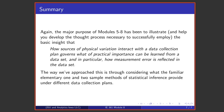To summarize modules five through eight what we've been doing is looking at elementary statistical methods and using them to illustrate the basic fact that how sources of physical variation interact with data collection governs what you can learn from a data set and in particular how measurement error is reflected in the data set.